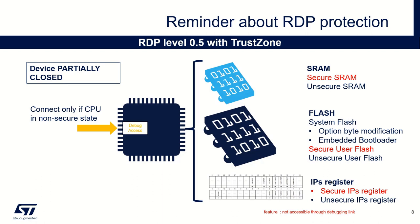RDP 0.5 is only available when TrustZone is activated. This level prevents the access of all the secure resources through the debugging link. But be careful: in this configuration, you can only connect with the debugger when the CPU is in non-secure state. And when TrustZone is enabled, at boot time the CPU is in secure state. So if your flash is empty and you activate RDP 0.5, you can't connect anymore to your target. If you lock your device in such a way, you can activate the embedded bootloader, which allows to put your CPU in non-secure state and will allow to recover. I would advise to always ensure there is a secure code executed at boot time that properly calls the non-secure application, before activating RDP 0.5.